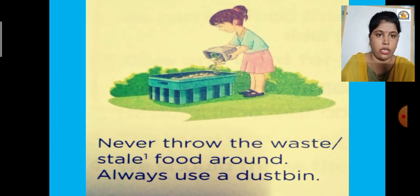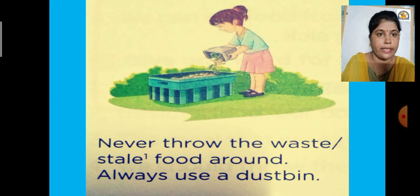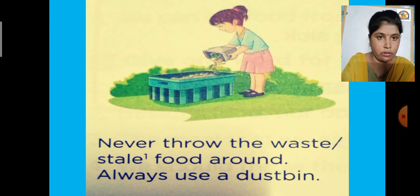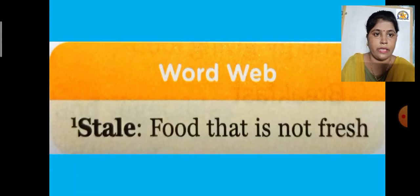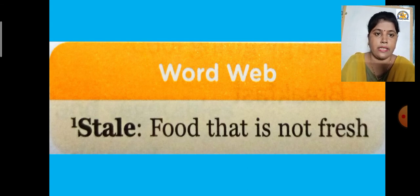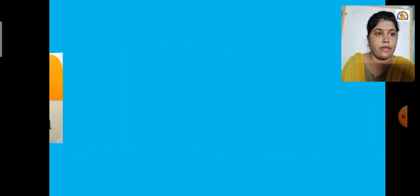The next good food habit is: never throw waste or stale food around — always use a dustbin. We must keep our house, surroundings, society, and country clean. 'Stale' means food that is not fresh — like leftover food from the previous night. Never throw stale food here and there; always dispose of it properly in a dustbin.